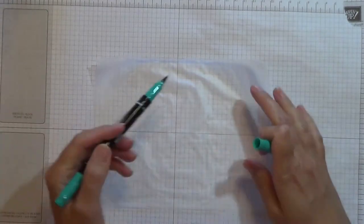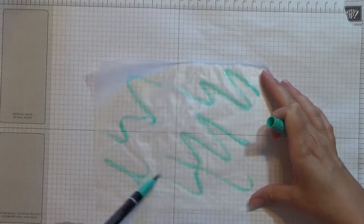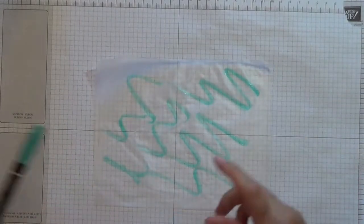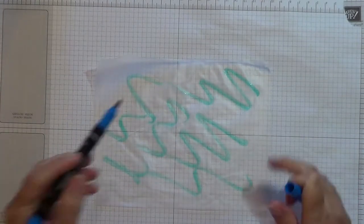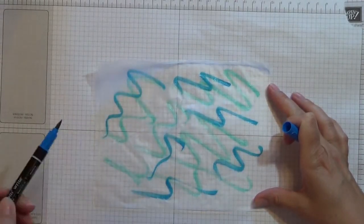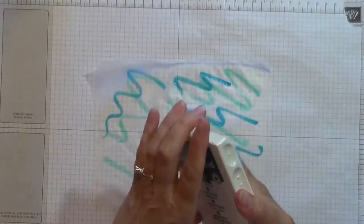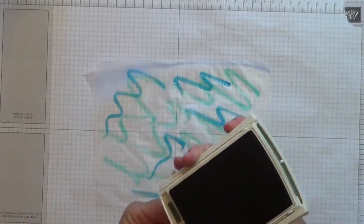You are going to start with your lightest color first and you're just going to scribble some color onto your plastic wrap. And you're starting with your lightest color because when you go to the darker marker, if a little lighter ink gets on the darker marker, it won't mess up the marker. If you go from dark to light, you end up staining your light marker so you don't want to do that.